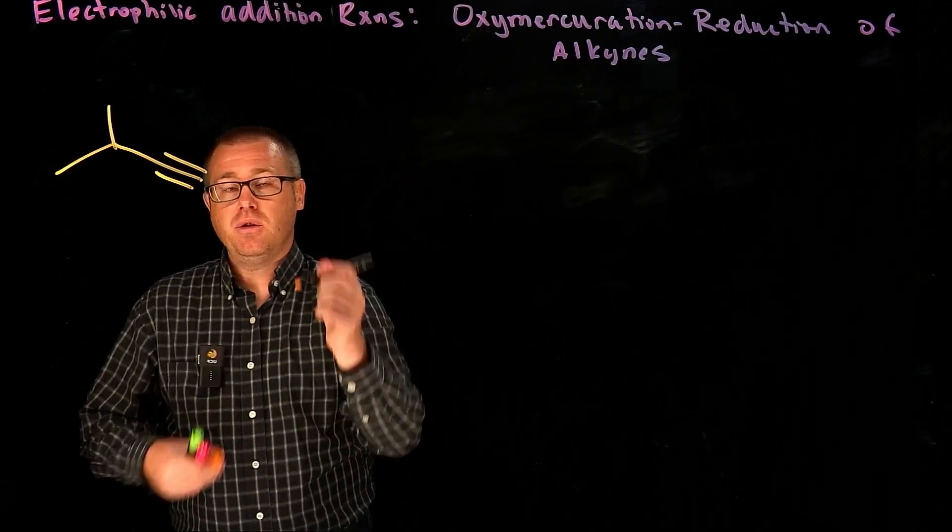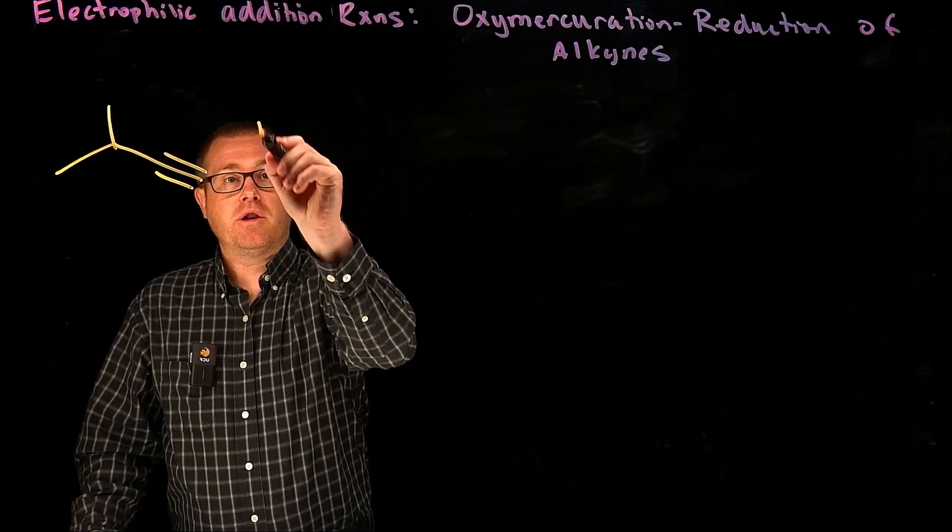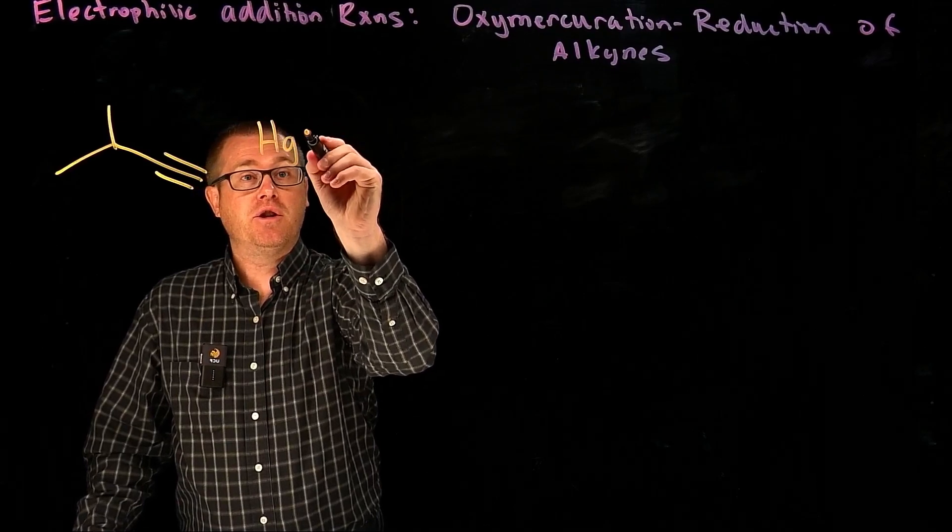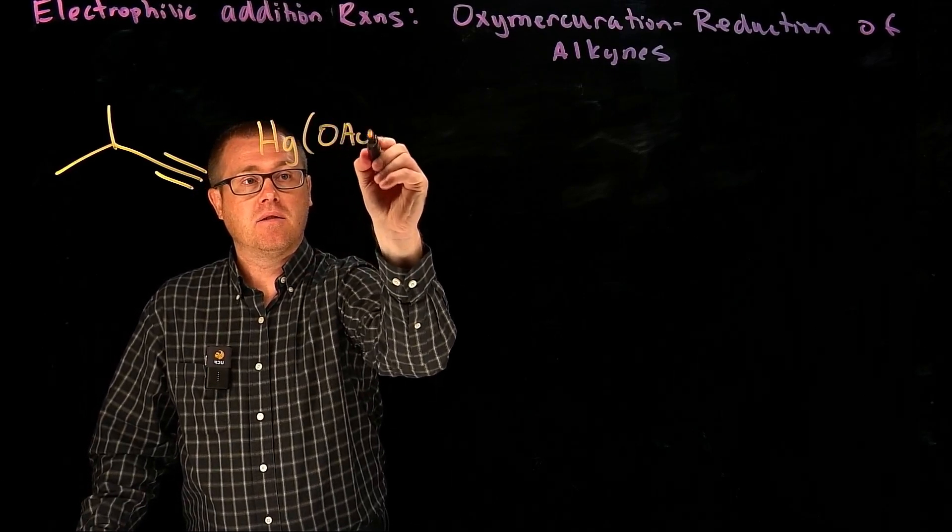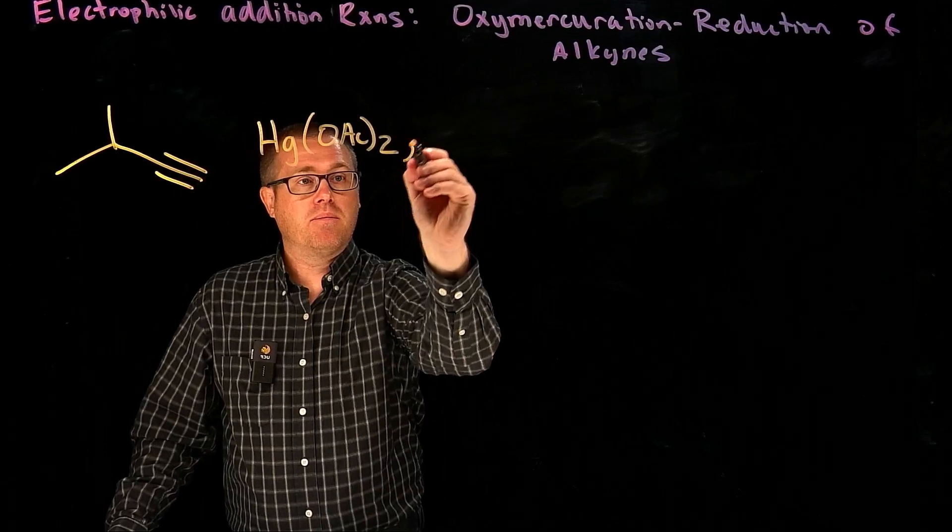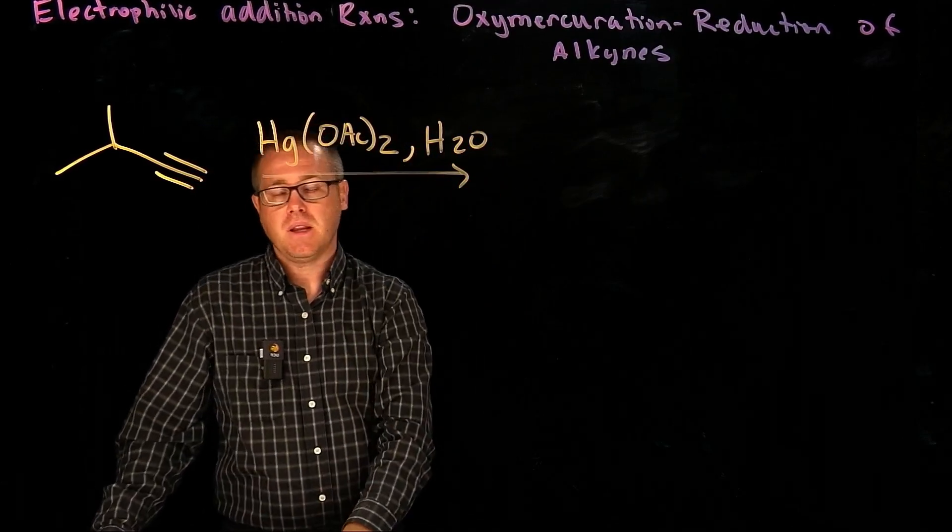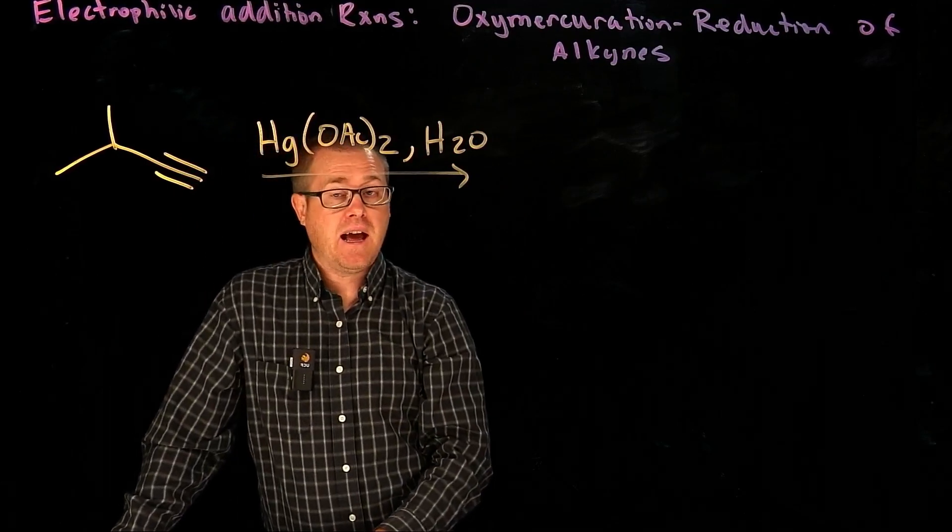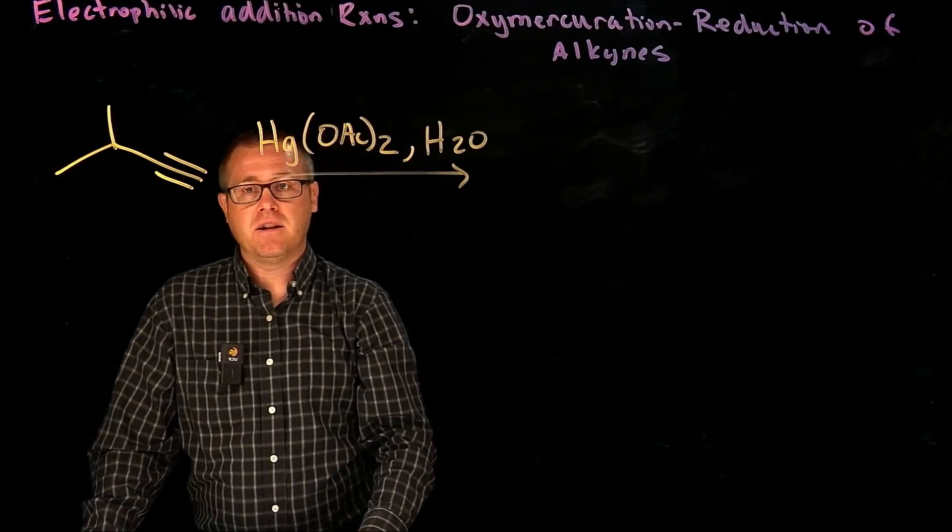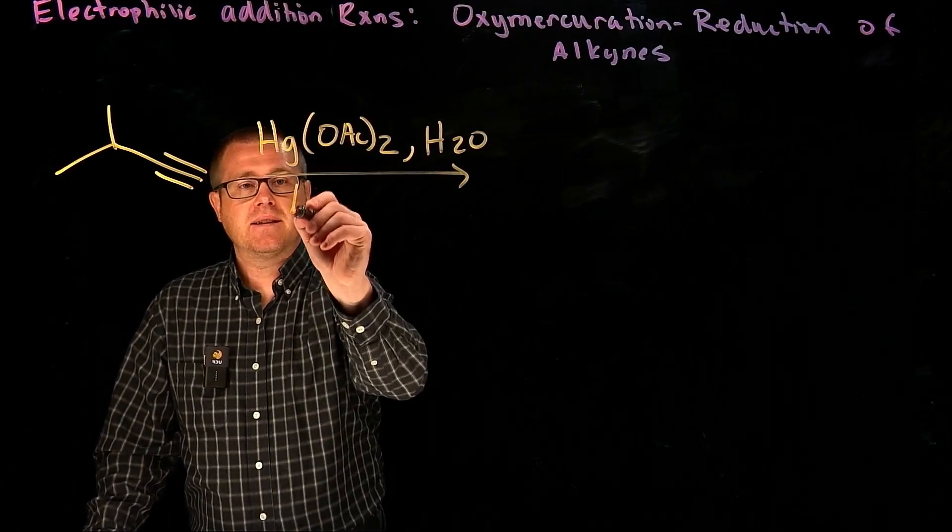We're going to treat it with the same mercury(II) acetate and put in some water like we've been doing. But instead of THF, we're going to add a little bit of acid, let's say acetic acid.